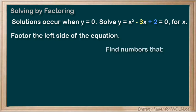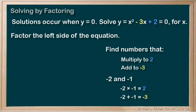Let's find two numbers that multiply to positive 2 and add to negative 3. What about -2 and -1? -2 times -1 equals 2, and -2 plus -1 equals -3. Wonderful. So x² - 3x + 2 factors into (x-2)(x-1).